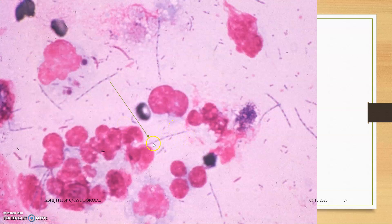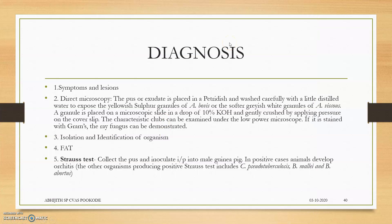These are the ray fungus or the Actinomyces species. The diagnosis is based on tentative lesions — that is symptoms and lesions — direct microscopy, and isolation and identification of the organism, FAT. The Stroh test can also be done. For information on the Stroh test, you can see my video. Thank you.